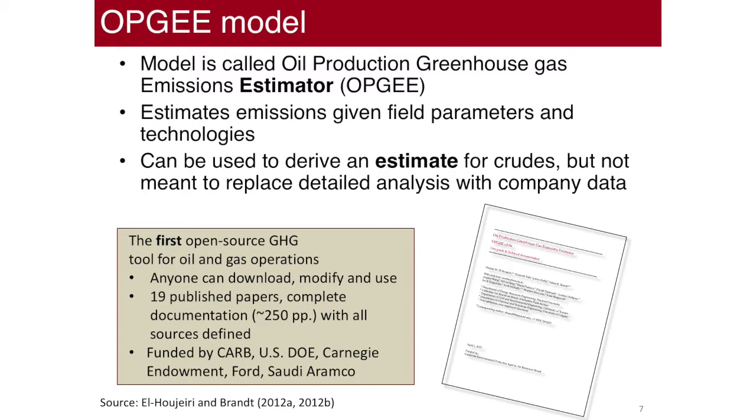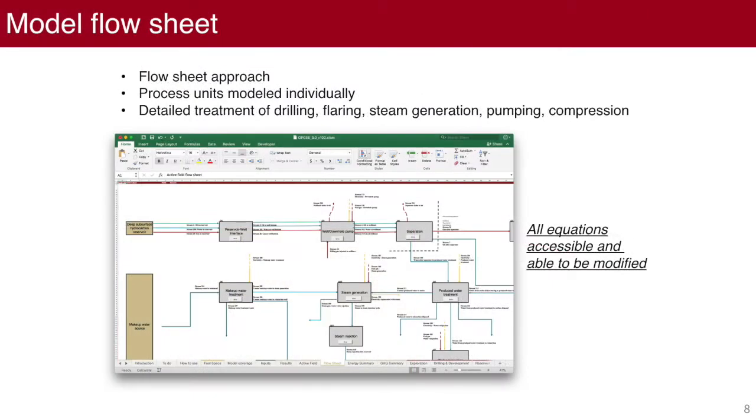A whole bunch of published papers. The model is completely open. This was developed with funding from the California Climate Agency, the California Air Resources Board. They've funded development of this tool for about nine years as part of the climate regulation in California. They need the numbers that this tool generates. As well as Department of Energy, Carnegie Endowment, Ford, and Saudi Aramco. What does the model look like? It's a flow sheet kind of model approach. So any of you who have taken a chemical engineering class will recognize this kind of flow sheet. It's nice because all the equations are accessible, able to be modified, examined, fully open source.